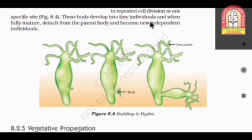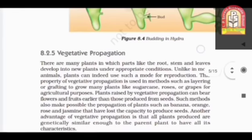This bud develops into tiny individuals. It means this bud will grow into new individuals. When fully mature, when this baby Hydra will get fully mature, then it will be detached. It will be separated from the parent plant. Detached from the parent body and become a new independent individual. When it will get detached, then it's not dependent on their parents for its own growth.